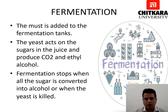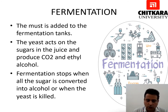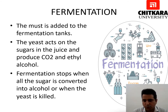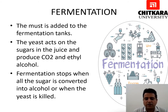The next step is fermentation, which is a very important step. The must made by pressing is added to fermentation tanks. The yeast acts on the sugar in the juice and produces CO2 and ethyl alcohol. Sulfur dioxide (SO2) is also added to avoid harm from bacteria and vinegar-causing acetobacter. The temperature is carefully controlled during fermentation, and the contact between the must and the skin is very crucial, using mechanical rotators for this step as well.